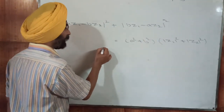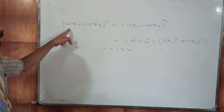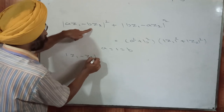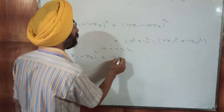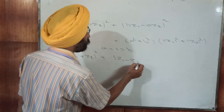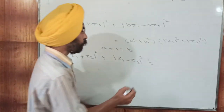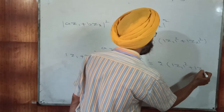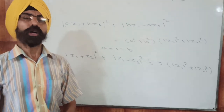There is one more very important property: mod of A times Z1 minus B times Z2 squared plus mod of B times Z1 plus A times Z2 squared equals A squared plus B squared times the quantity mod Z1 squared plus mod Z2 squared. As a special case, if A equals 1 and B equals 1, then mod of Z1 minus Z2 squared plus mod of Z1 plus Z2 squared equals 2 times mod Z1 squared plus mod Z2 squared.